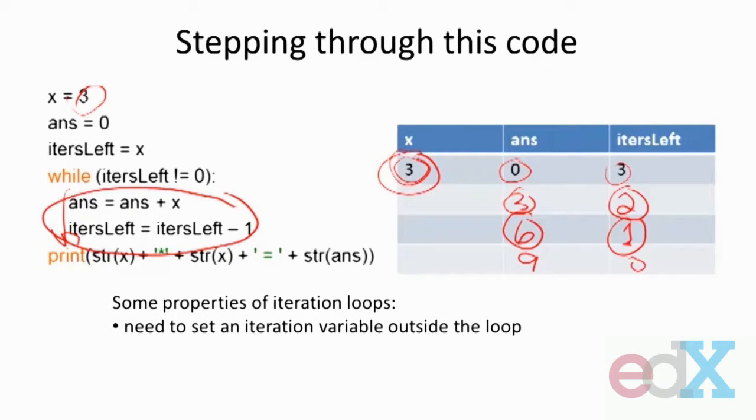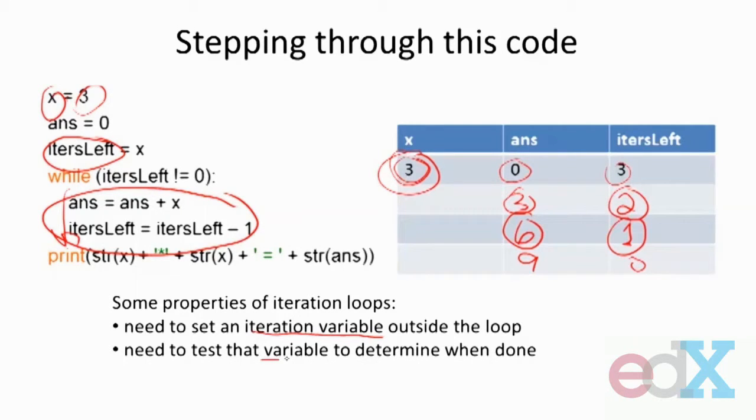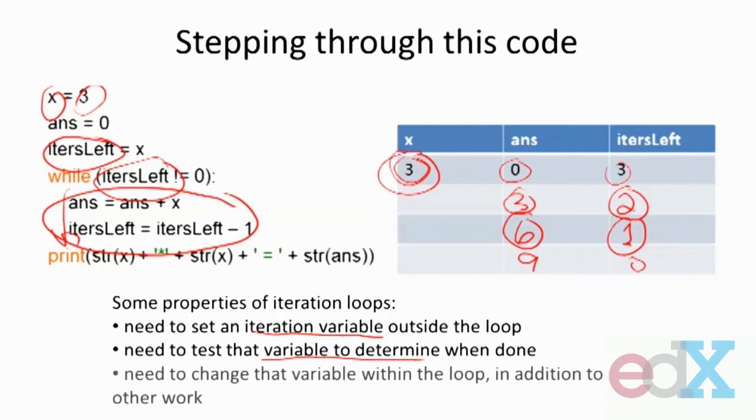You can also see some properties of an iterative loop. First of all, we need to set an iteration variable outside of the loop. In this case, it's x and itersLeft. And actually, the one I really care about here is itersLeft. I also need to test that variable to determine when I'm done. There's the use of itersLeft inside of the test. Now, it could be a simple test, it could be a more compound test, but that's basically what I need to test.